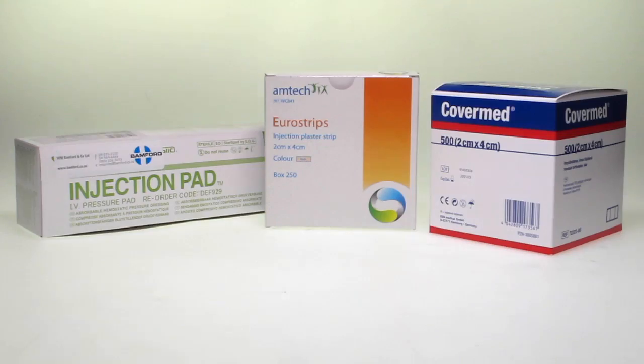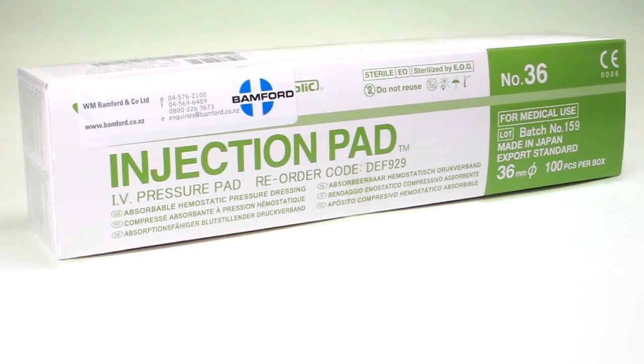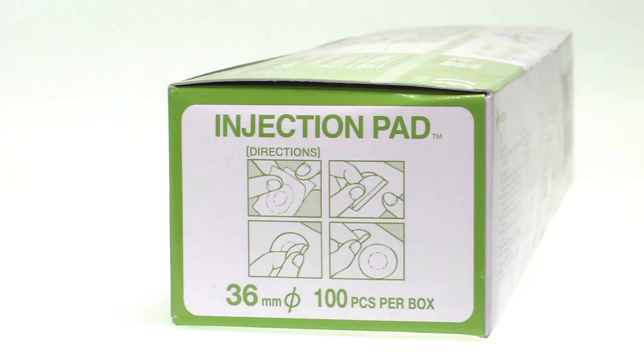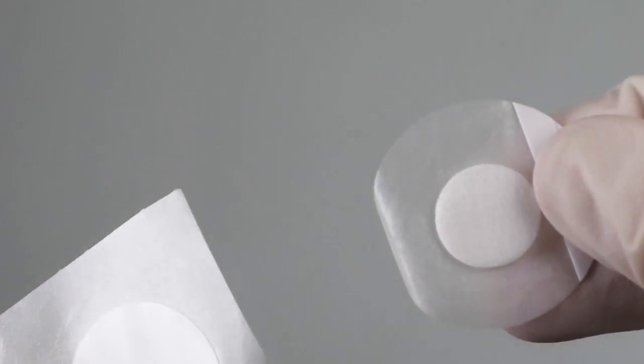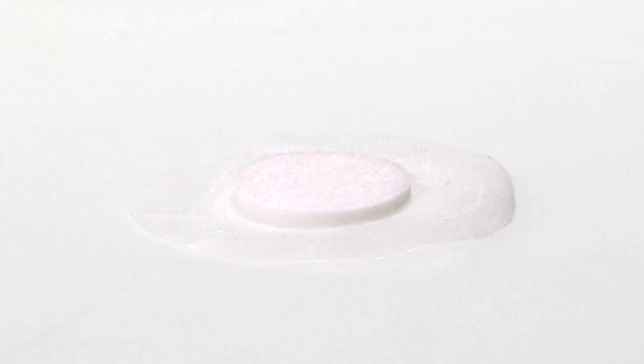Our range also features the IV injection strips with pressure pad available in a box of 100. They are a thick 36 millimeter circular pad made from cellulose fabric that is highly absorbent and helps to stop bleeding after an injection.